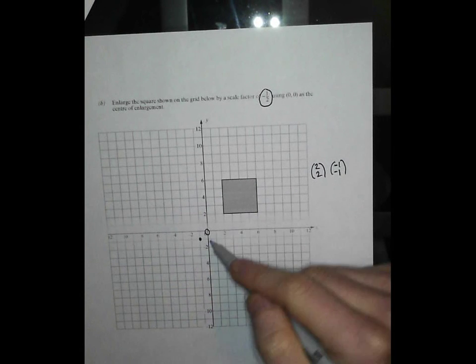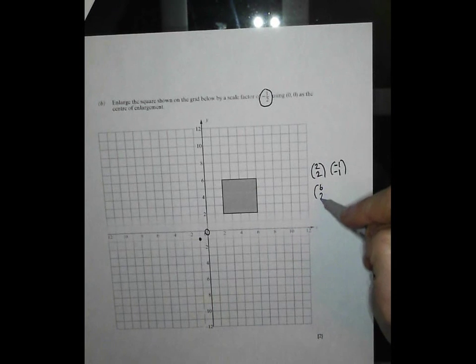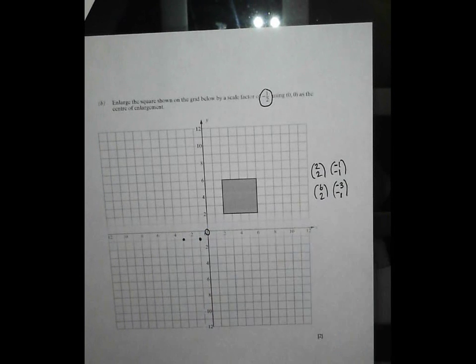Let's take this point. That will be 6 to the right and 2 up. We want to go half as far. That's 3 to the right and 1 up. But we want to go in the opposite direction because it's a minus. So let's go 1, 2, 3 to the left and let's go 1 down. No problem.